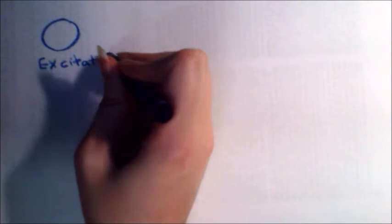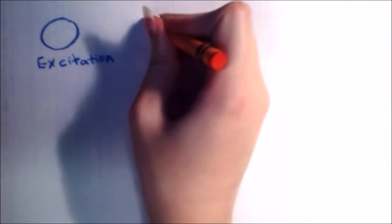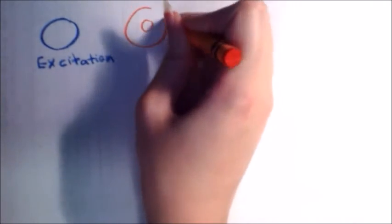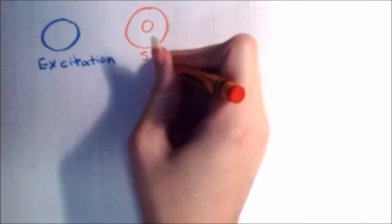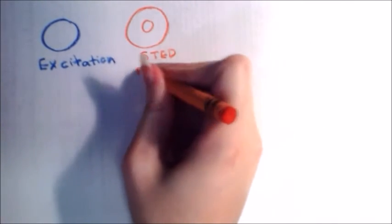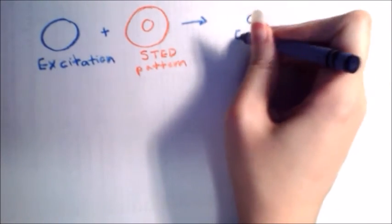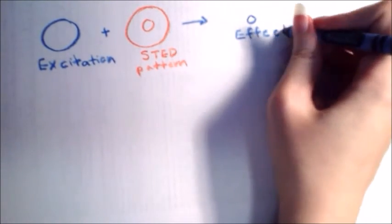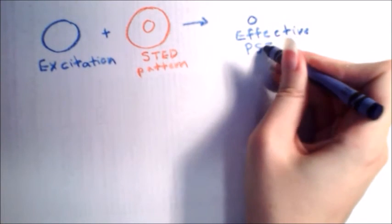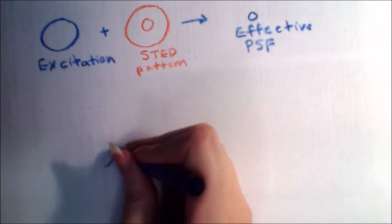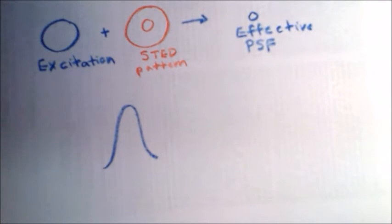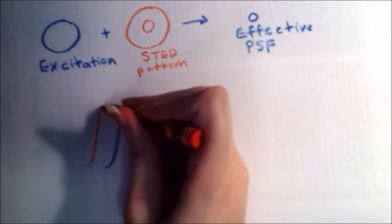Returning to STED microscopy and PSF engineering: in order to reduce the effective diameter of the excitation laser PSF, the periphery can be suppressed using a ring-shaped depletion laser. During STED microscopy, photoswitchable fluorophores are subjected to a scanning excitation laser pulse, followed immediately by a red-shifted ring-shaped depletion laser pulse, which is referred to as the STED beam. As a result, those fluorophores at the center of the excitation beam will freely fluoresce, while those at the PSF periphery will undergo stimulated emission, producing wavelengths that will be blocked from detection. Since only those fluorophores near the center of the PSF are detected, this combination of laser pulses creates a smaller effective PSF, resulting in an improved image resolution.